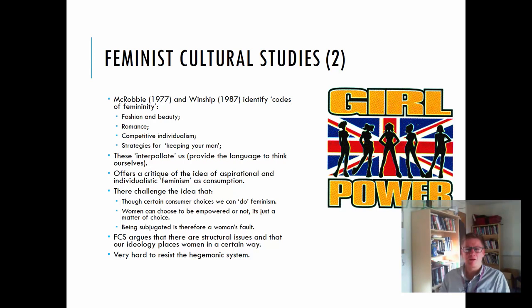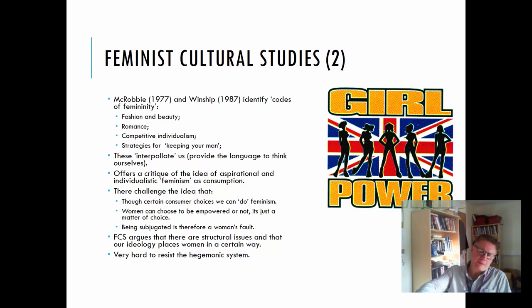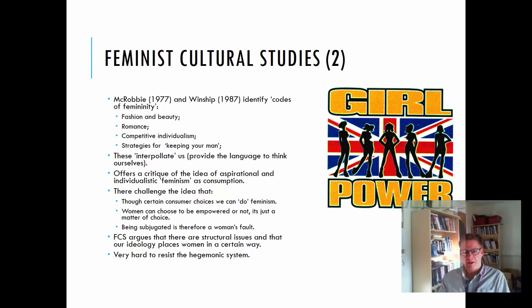Two of the main theorists here are McRobbie in 1977 and Winship in 1987. They identified codes of femininity — lines of argument running through the ideas of fashion, beauty, romance, competitive individualism, and various strategies for keeping your man. They looked at these codes in various forms of text and how they interpolate us, drawing upon earlier Marxist theories, particularly from Althusser — how we are brought to being through the codes and conventions of our society, which provide the language and descriptive terms by which we can think about ourselves.